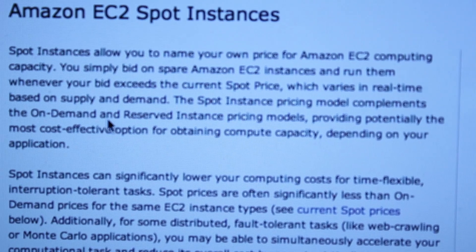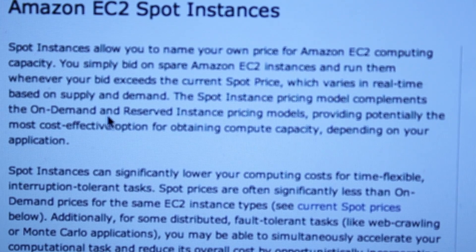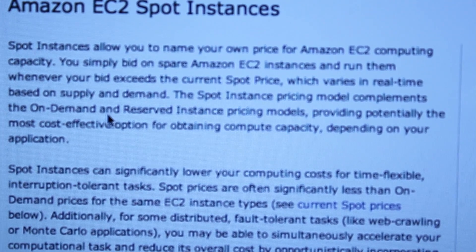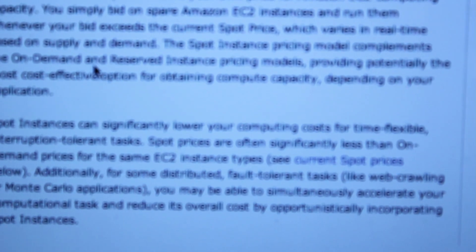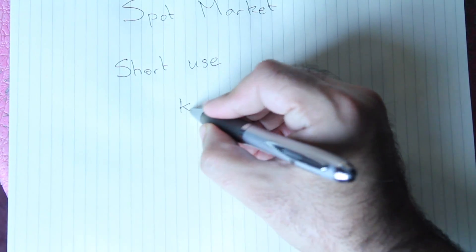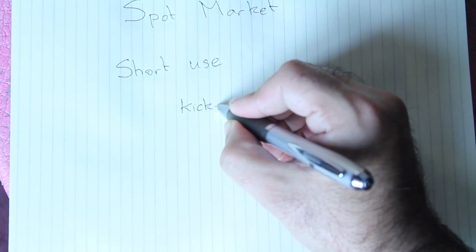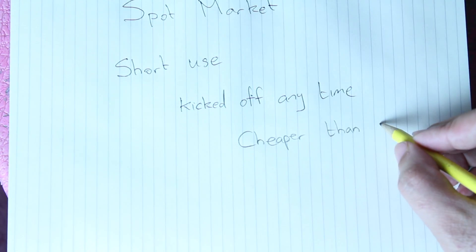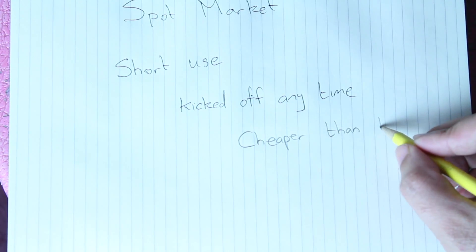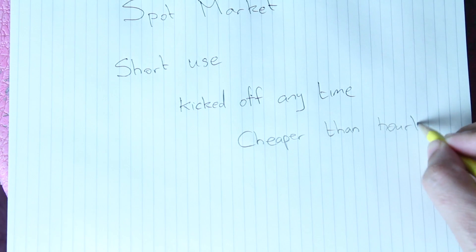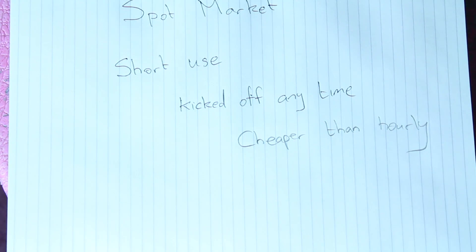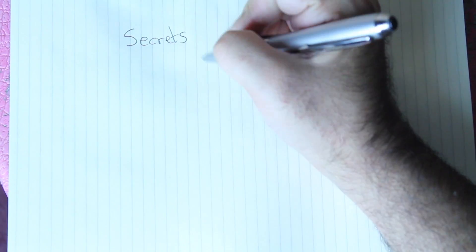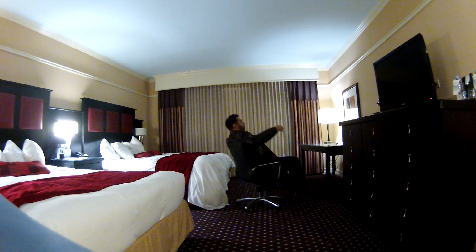Hotels offer a spot market for guests who only want a room for a short period of time. Amazon Web Services offers a similar spot market: consumers place a maximum bid on a VM, and if this is above the current spot price they get access to the resource. The downside is they can be kicked off at any time, but since Amazon Web Services determines when to terminate, customers aren't charged for any whole hours.